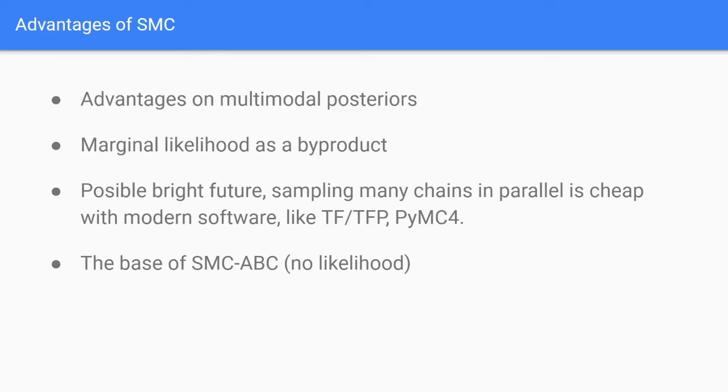Moreover, modern software like TensorFlow, TensorFlow Probability, or PyMC4 can allow for the sampling of multiple chains in parallel with little extra computational cost. In this regard, methods such as SMC that are built from the ground up to be run in parallel can benefit from this. It is also the base for SMC-ABC, a method for approximate Bayesian computation or in general simulation-based inference where calculating the likelihood is not always available.